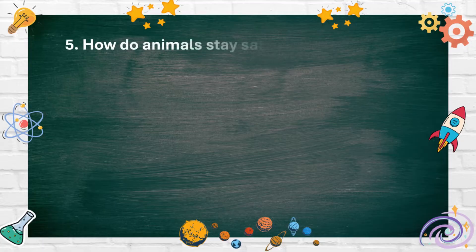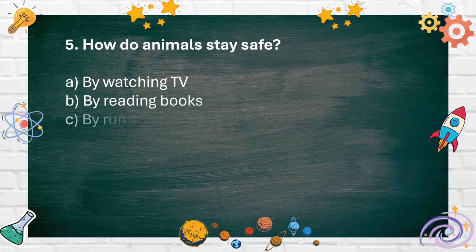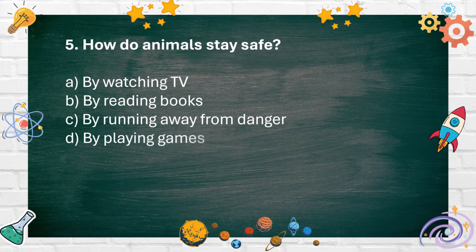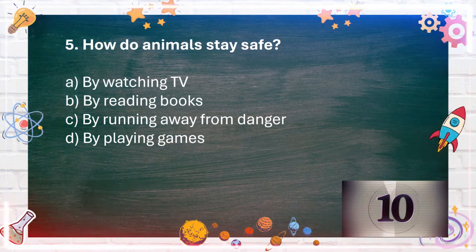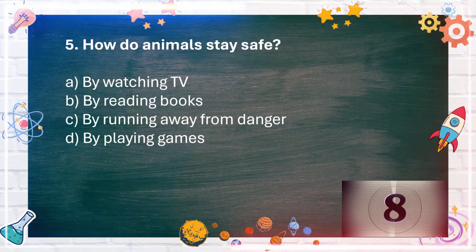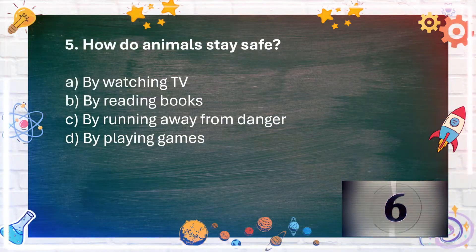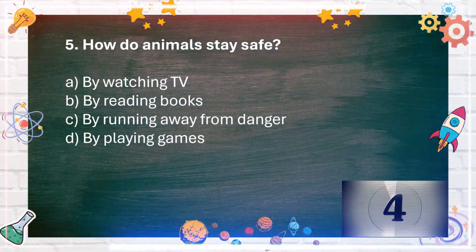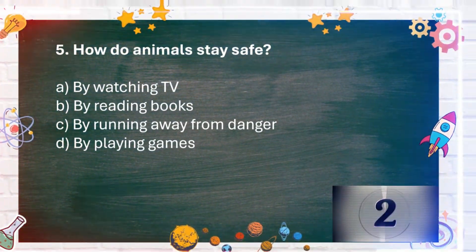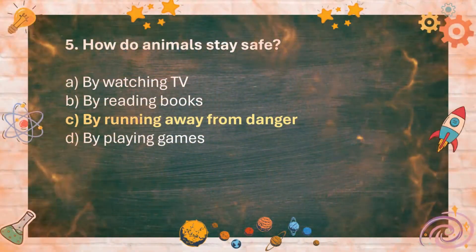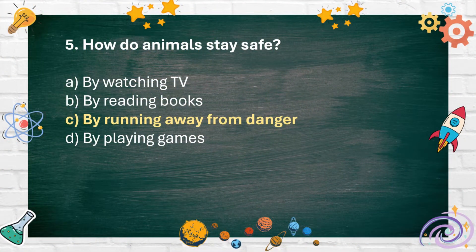Number 5. How do animals stay safe? A. By watching TV B. By reading books C. By running away from danger D. By playing games. The answer is C. By running away from danger.